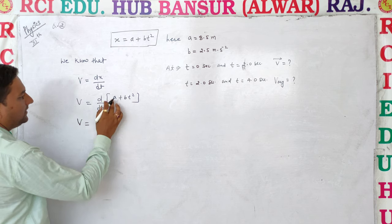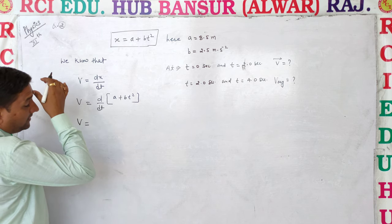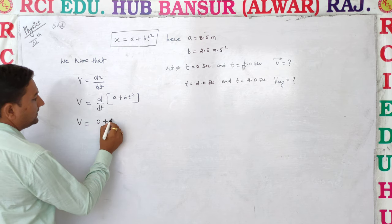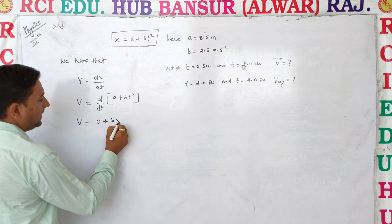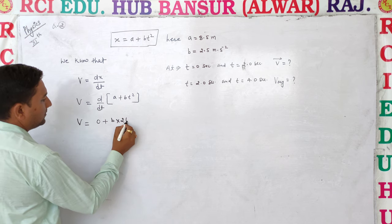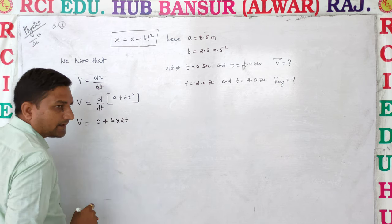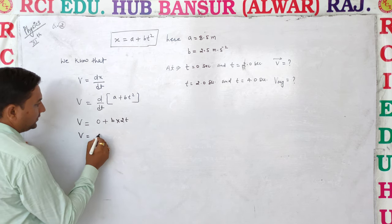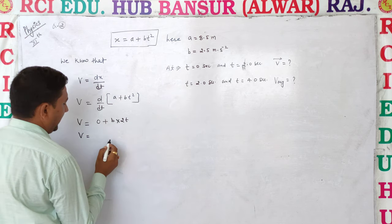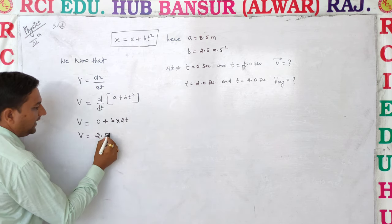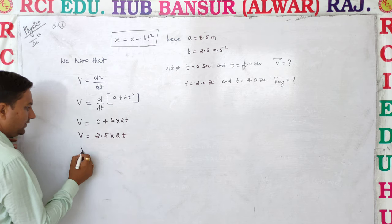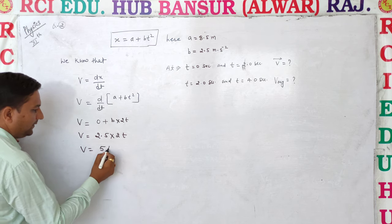Differentiating: the differentiation of constant a with respect to t is 0, and b is constant, so differentiation of bt squared with respect to t gives 2bt. Therefore v is equal to 2bt, which simplifies to v is equal to 5t.